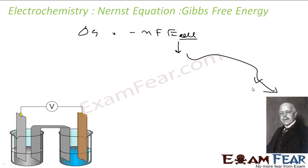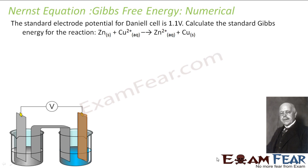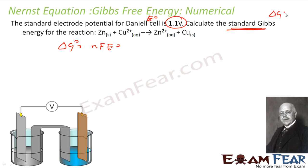This is the Nernst equation. Now if you can find E cell, you can easily find Gibbs free energy also. The standard electric potential for Daniel's cell is given and we have to calculate the Gibbs energy for this reaction. You know that delta G is nothing but minus NfE. Please note, E-naught is given, so I need to find standard Gibbs free energy, delta G-naught.